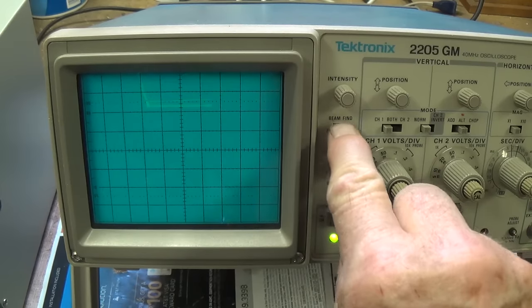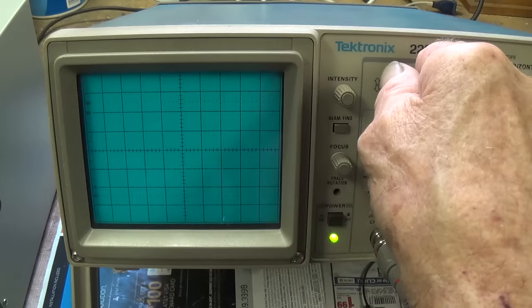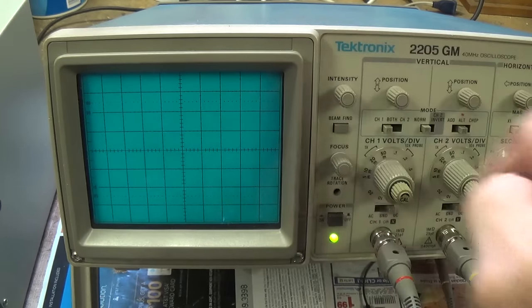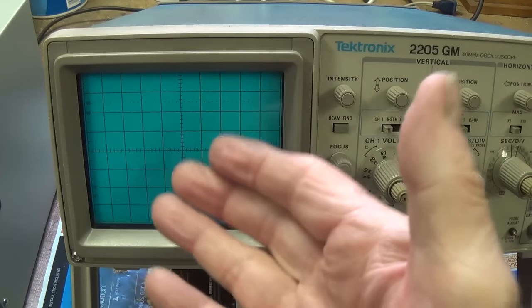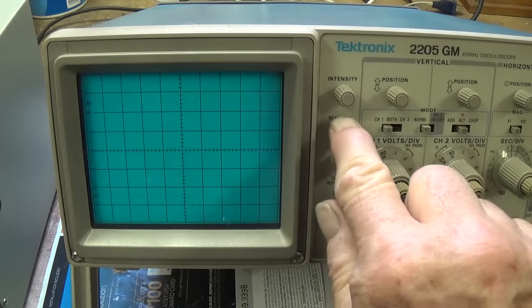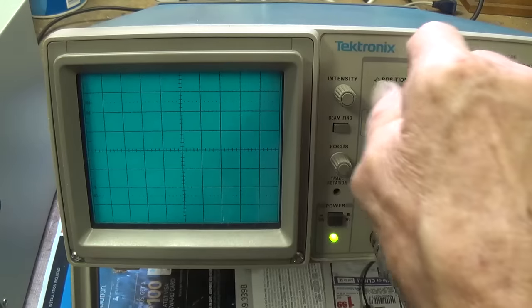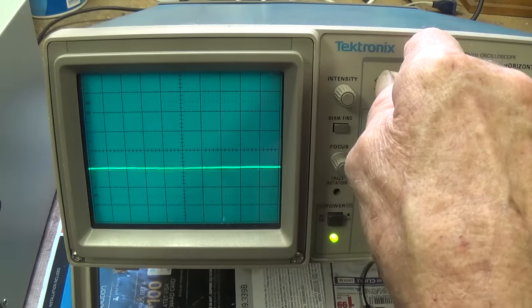So then I know that I use my position control to bring it down. Now, what if it was off the bottom of the scope? Is the oscilloscope working now? I'm not sure. Let's push beam find. Oh, no, I'm down here. Here I am. So we'll bring it up from the bottom.